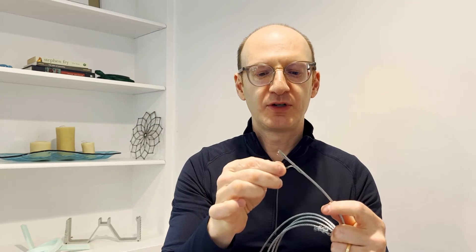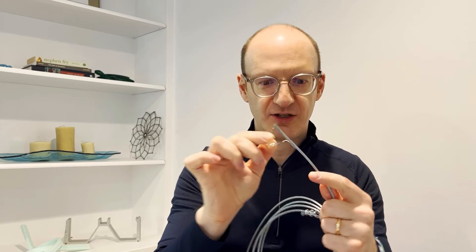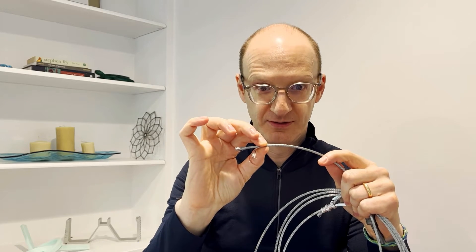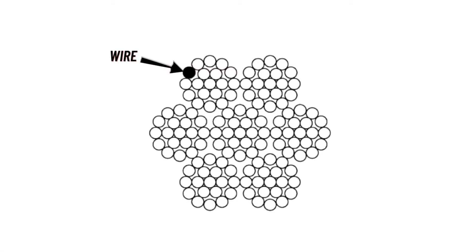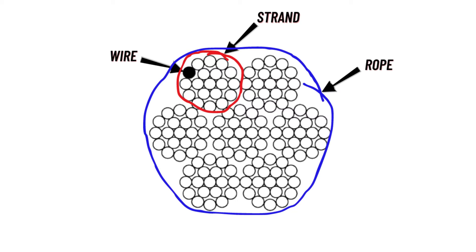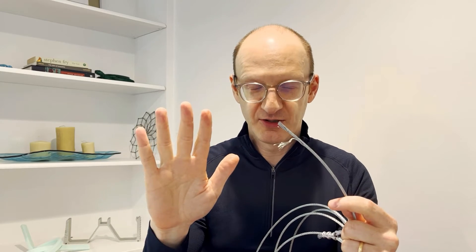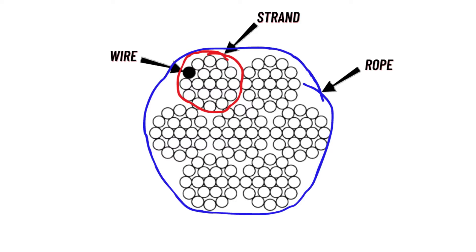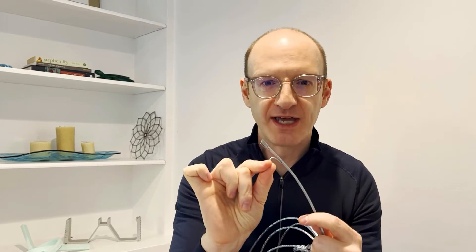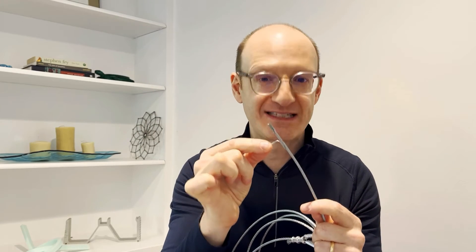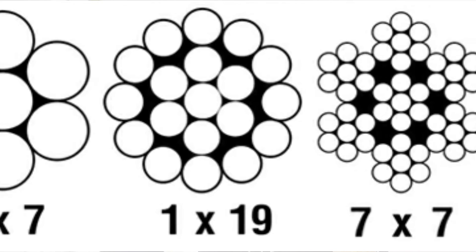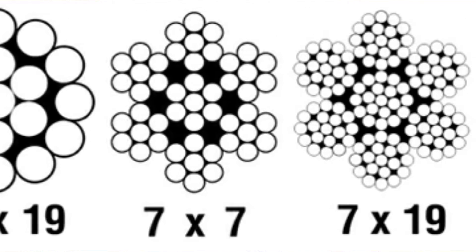If you then put multiple strands together, you get what's called rope. So: wire is individual, strand is a group of wires, and a group of strands is called rope. You might be wondering — what is cable then? Cable is either rope or strand. In other words, cable is just when you have a bunch of wires, regardless of the organizational arrangement — whether that's a 1x19 or something like 7x7, which is 7 strands each with 7 wires.